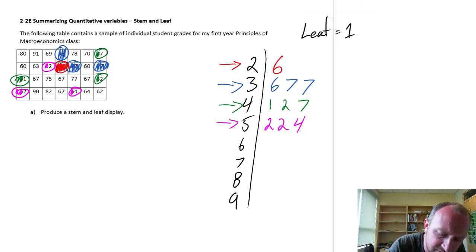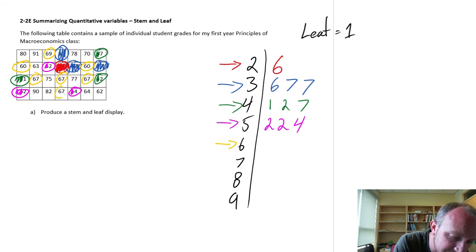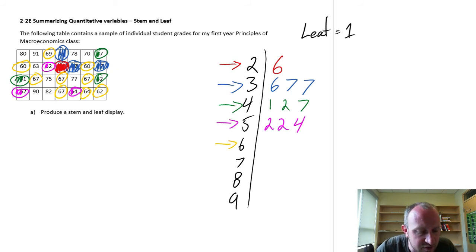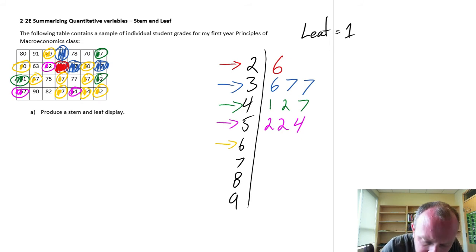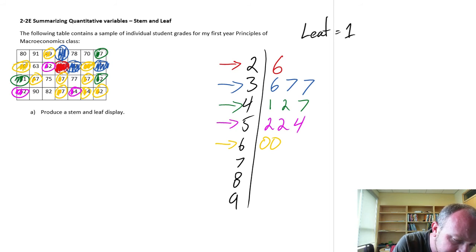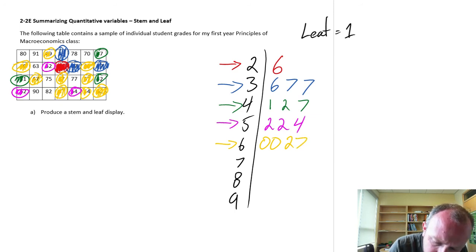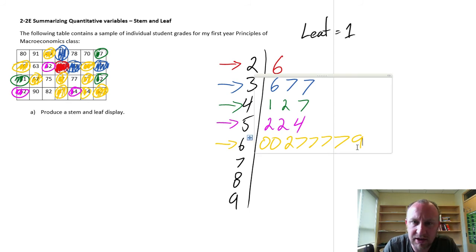Moving on to stem 6, I've got a few here: 69, 60, 60, 67, 67, 67, another 67, 64, and 62. I'll scribble out all those 6s and ignore the stems. The leaves in order from smallest to largest are: 0, 0, 2, 3, 4, 7, 7, 7, 7, and 9. That's quite a few observations for stem 6.